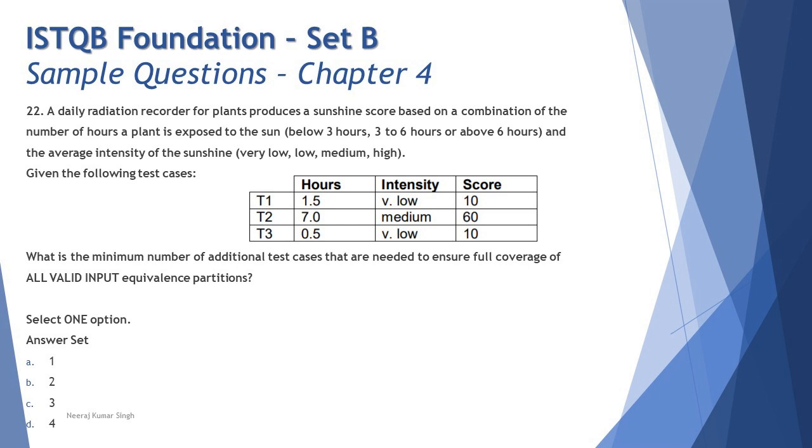Your low and high are certainly included. Should I go for three test cases? No, that's also wrong. Each test is taking both parameters - number of hours and intensity in one test. You will take one more test to cover 3 to 6 hours and with that you will cover either low or high. You would need one more test to cover the remaining intensity which is high.